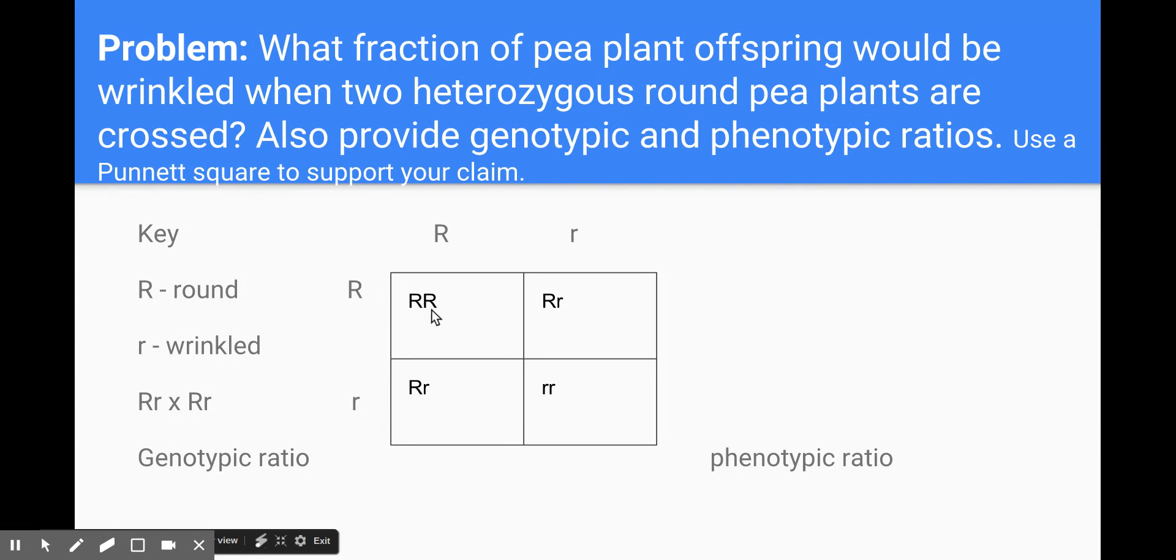In our Punnett square we've got the results of our cross here. We end up with one F1 offspring or first filial generation offspring that would have the homozygous dominant genotype, two that are heterozygous and one that is homozygous recessive. So this should all be review for you up until this point.